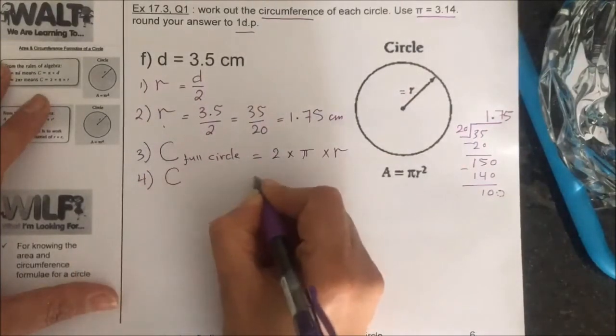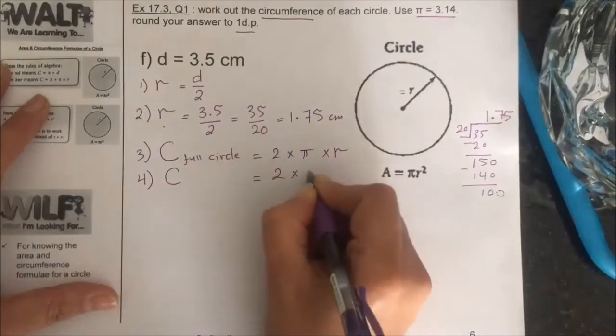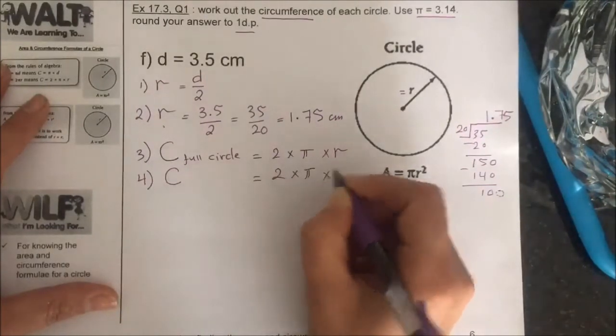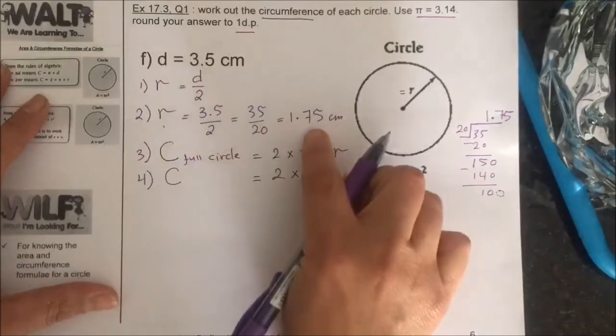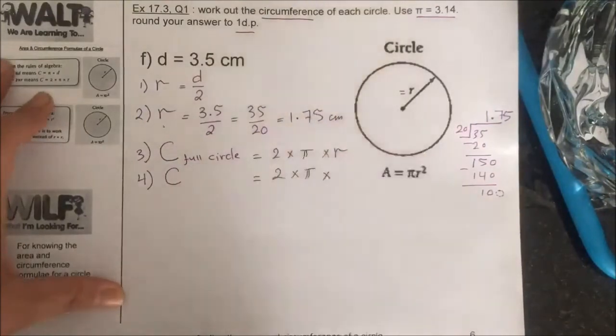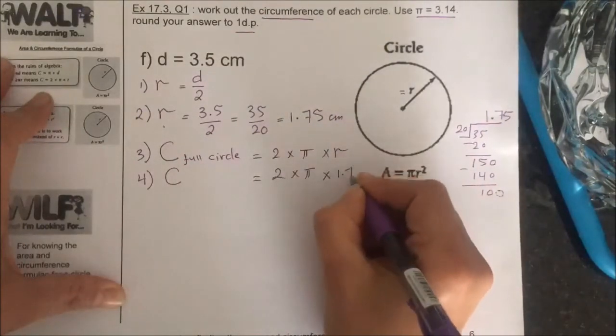Step number four: substitute in the formula. I'm going to keep at first pi as pi times... what is the radius? Yes, it's 1.75.